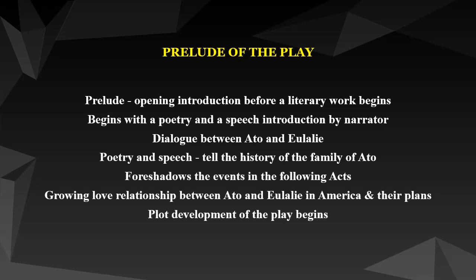Next, we are going to see the prelude of the play. A prelude is the opening introduction before a literary work begins. The prelude of this play begins with poetry and a speech introduction by a narrator, followed by dialogue between two key characters, Ato and Eulalie. The poetry and speech by the narrator tell the history of the family of the main character, Ato, and also foreshadow the events we will see in the acts that follow. There is also a growing love relationship between Ato and Eulalie, even as they graduate in America, and they talk of their plans of relocating to Ato's motherland, Ghana.